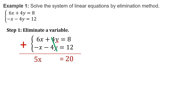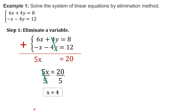Since we have eliminated the variable y, we are now solving for the variable x. To solve for x, we have to leave x alone. Therefore, this positive 5 must be cancelled. To cancel it, just divide both sides by positive 5. Cancel. 20 divided by 5 will give us positive 4. So, the value of x is equal to positive 4.